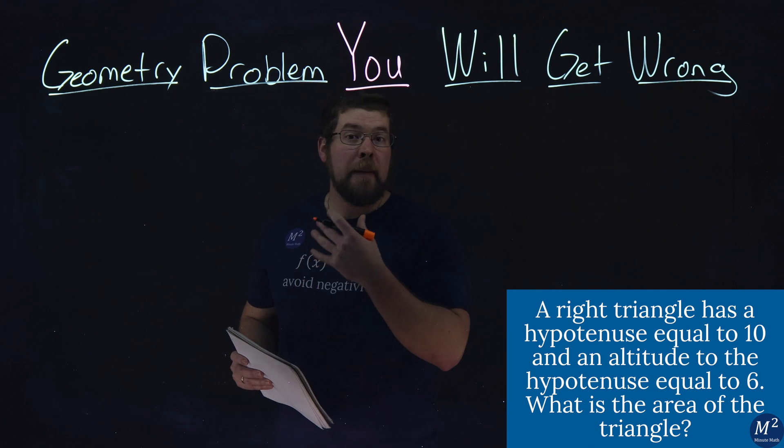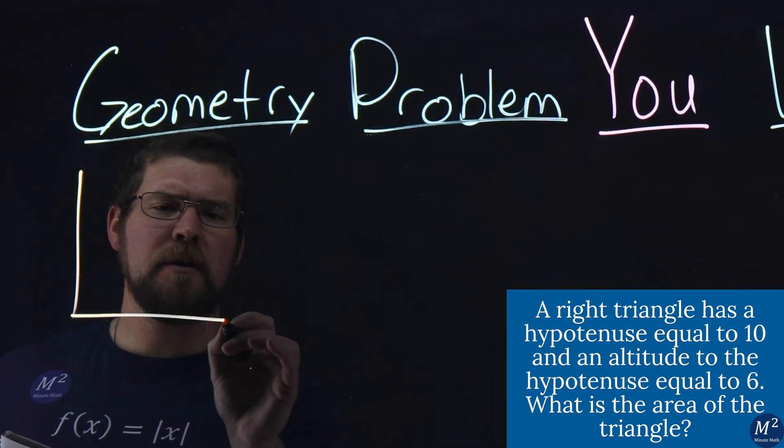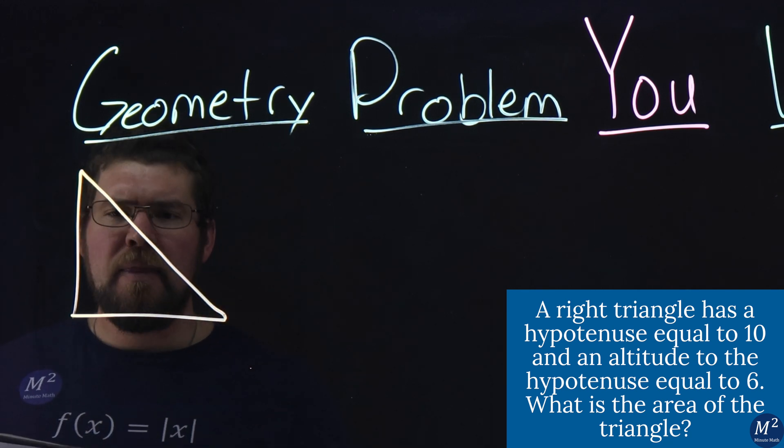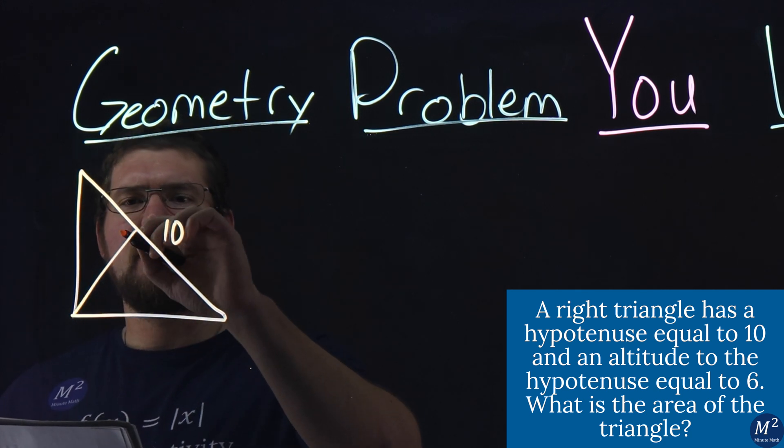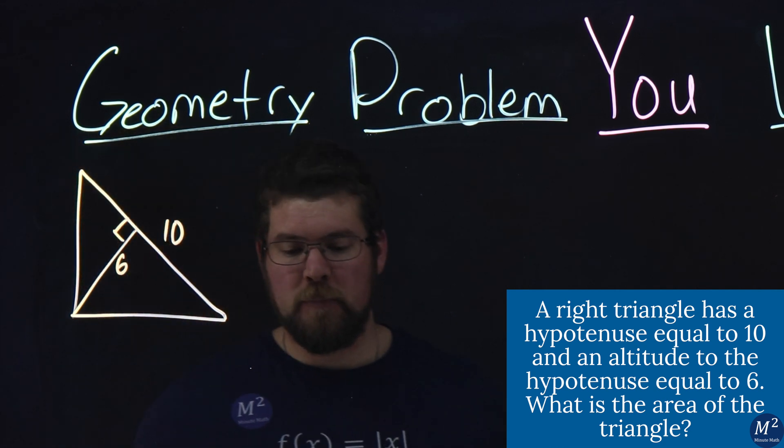Now, I like to draw a picture like most geometry problems. So we have a right triangle here, pretty easy to kind of go off of. They tell us it has a hypotenuse of 10 and we have an altitude that connects it here, perpendicular. And we have a 6 there.